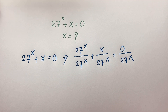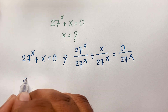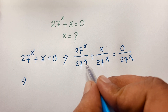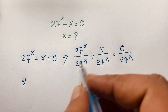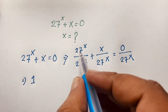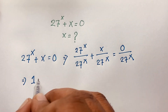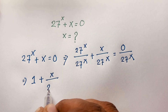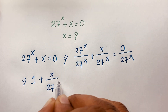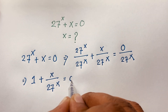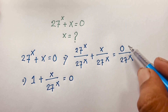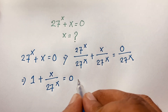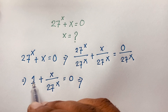Now you can see easily that 27^x / 27^x cancels out and becomes 1, plus x / 27^x = 0. And 0 / 27^x is equal to 0.